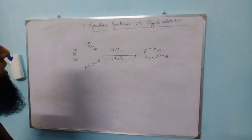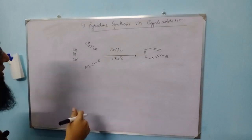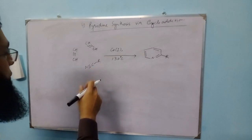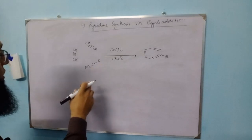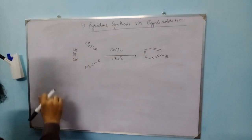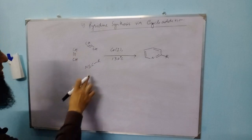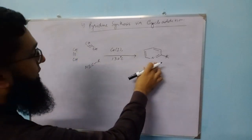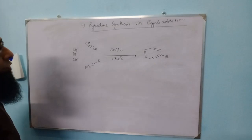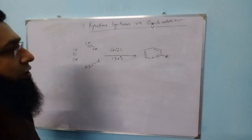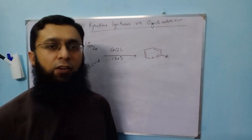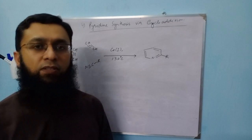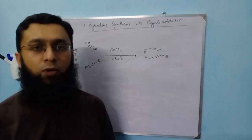Pyridine derivatives can also be synthesized via cycloaddition — for example, cobalt-catalyzed co-oligomerization of nitriles with alkynes, which gives pyridine derivatives via cycloaddition. These were a few methods for the synthesis of pyridine. If you have any questions or queries, please leave them in the comment box. Thanks.